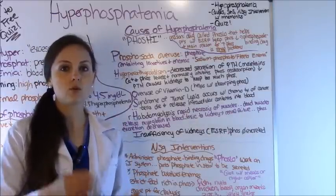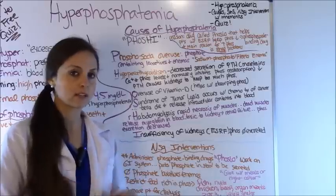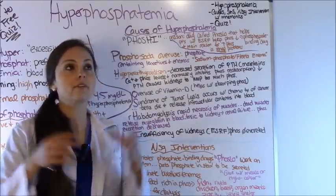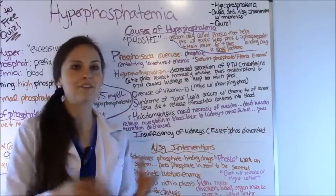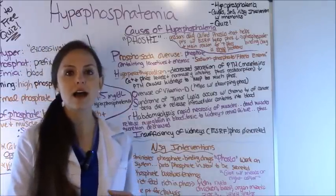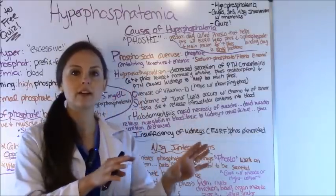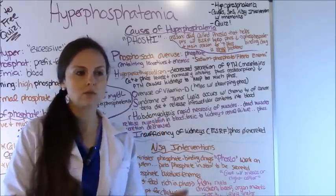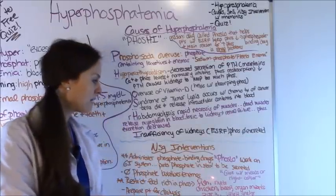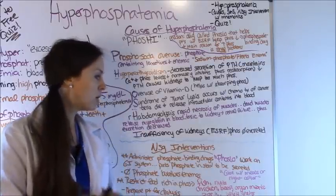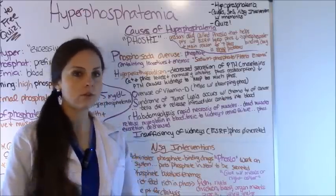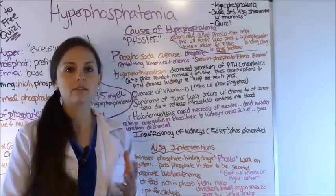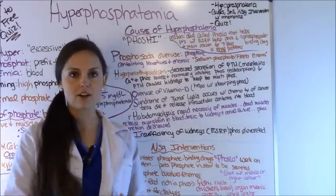Don't give patients any phosphate laxatives or enemas — remember how that affects those phosphate levels. You want to restrict foods that are high in phosphorus. On a renal floor every patient is on the renal diet. Foods high in phosphorus that you don't want the patient to eat include fish, nuts, chicken, beef, pork, organ meats, and whole grains. You may get scenarios where you're doing diet teaching with a patient who has a high phosphorus level and need to identify which food requires re-education. Finally, if the patient is in renal failure, you're going to need to prepare them for dialysis to help get that phosphate level down.